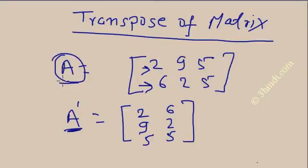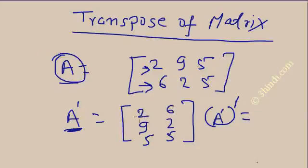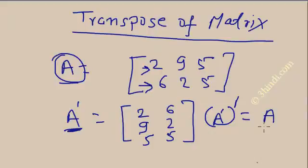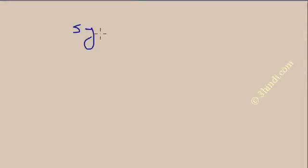Here you can see the transpose of transpose of matrix A. When you take A dash and transpose it again — the first column becomes the first row, the second column becomes the second row — you get back the original matrix A. So the transpose of the transpose of a matrix is the same as the original matrix.